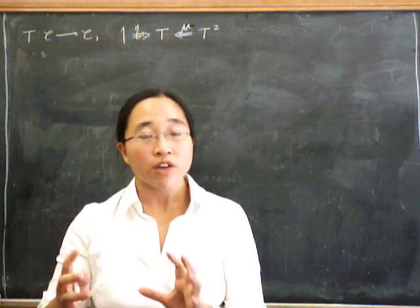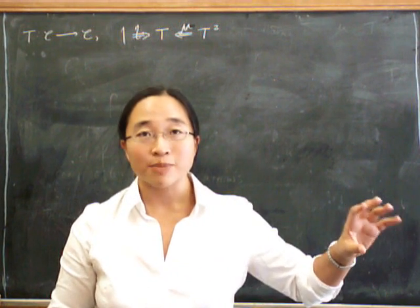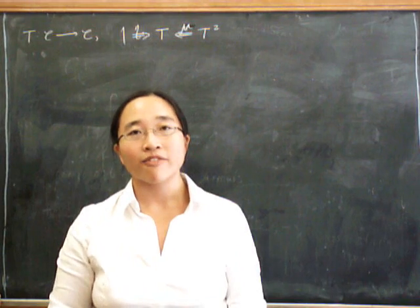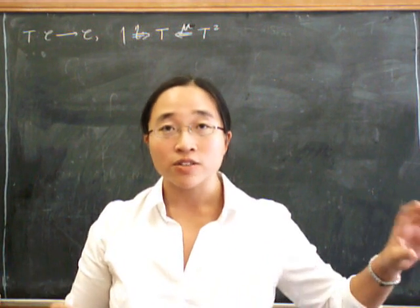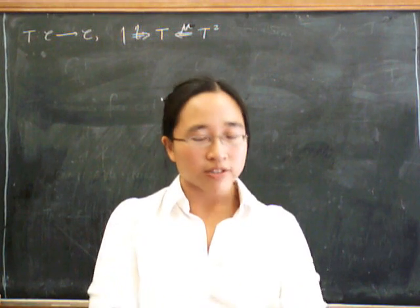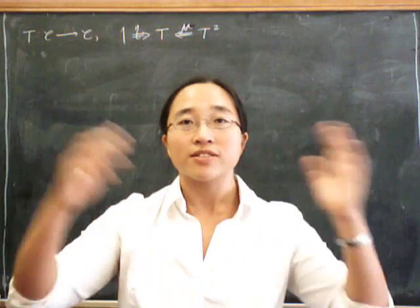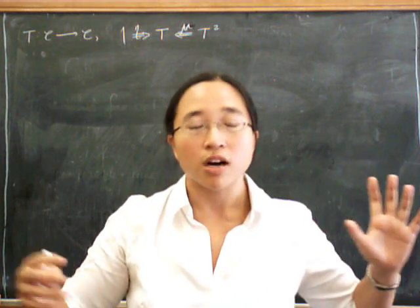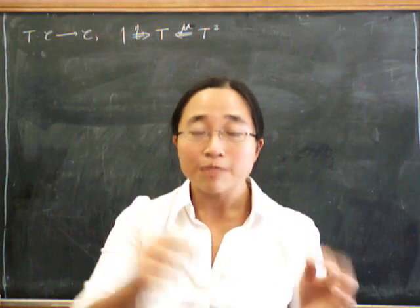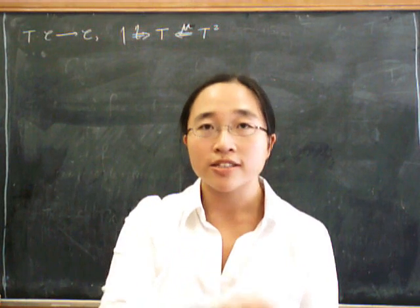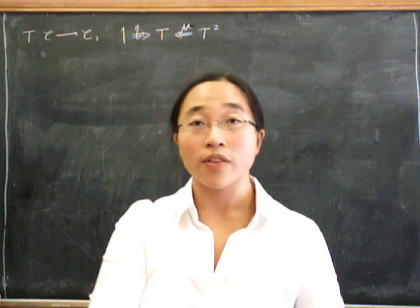For example, we have a monad for the theory of monoids, and then an algebra for that monad is going to be an actual monoid. Or we have a monad for the theory of categories, and then we have an algebra which is an actual category. One way of thinking about it is that the monad — the action of the functor — gives us all the operations that in principle are needed in this theory. And then when we have an algebra, it tells us, in this particular case, how we're actually going to evaluate it: where are we going to find those operations, what are they, what do they do?